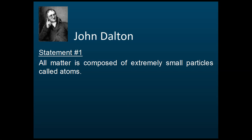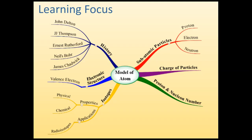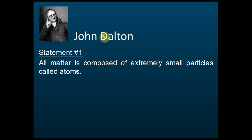Let's start with the first scientist, John Dalton. The first scientist we are going to discuss is John Dalton. There are a few statements in John Dalton's model of the atom. According to John Dalton, all matter — everything in this world — is composed of very, very small particles called atoms.